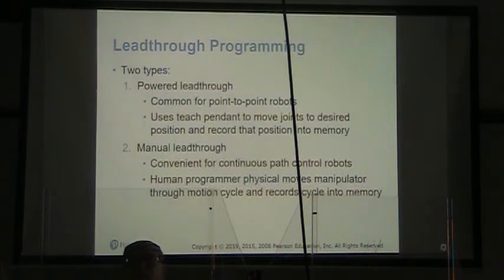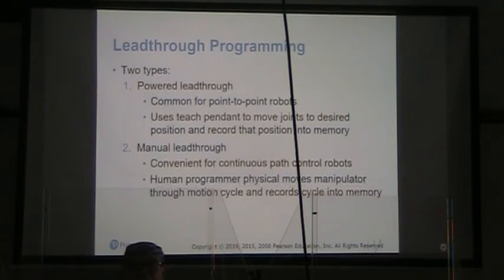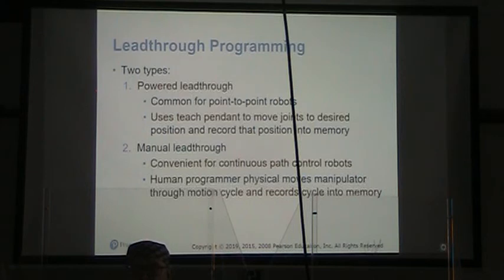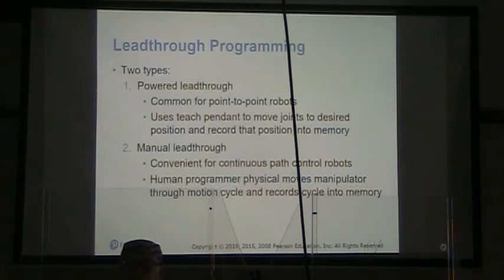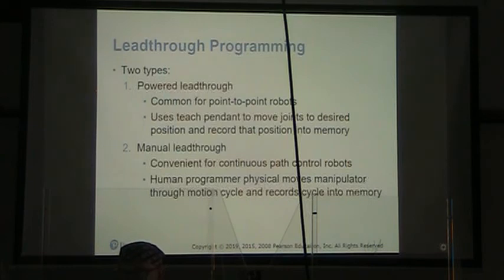In powered lead-through, we move the robot joint by joint, punch a button to record position one, then position two, position three, and so on. Manual lead-through is used for continuous path control robots — the human physically moves the manipulator through the full motion cycle while the robot records it into memory.